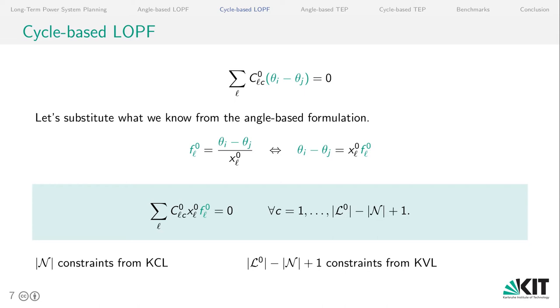So from the angle-based formulation, we had that the flow is the angle differences divided by the reactances. And if we move some things around, we can substitute this equation into the condition for Kirchhoff's voltage law. And in this case, we get a new set of constraints, namely L minus N plus 1 constraints, which sums up the elements of the cycle incidence matrix, the reactances, and the flow variables. And these have to add up to zero.